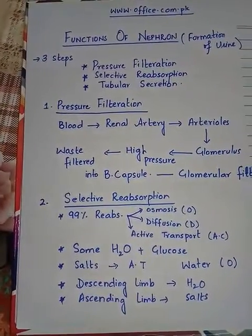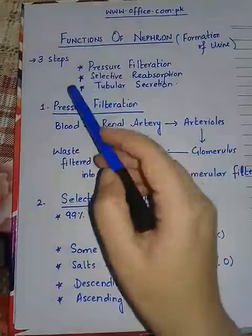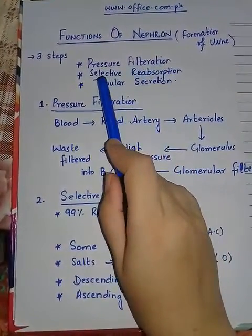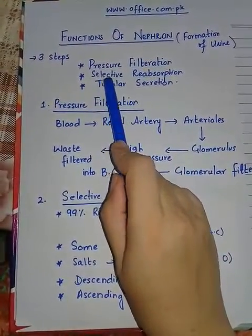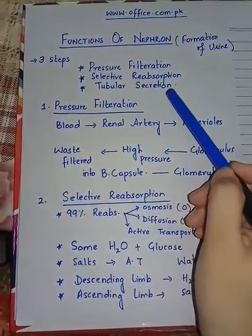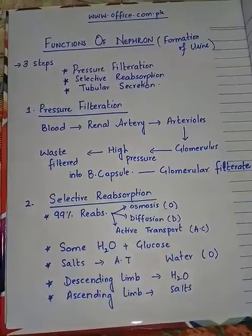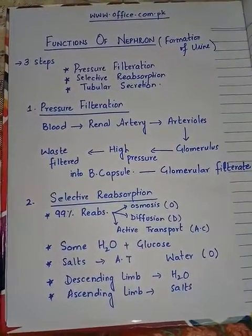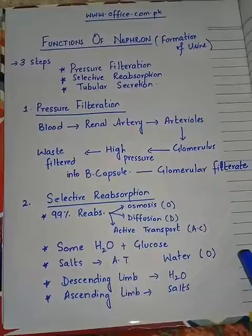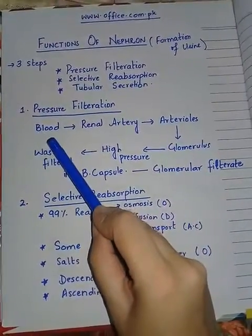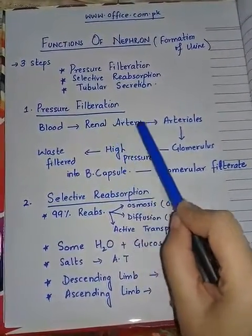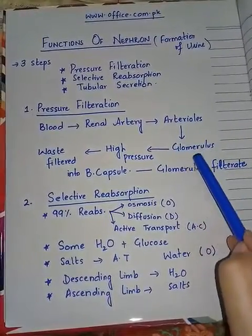Urine formation is completed in three steps: number one, pressure filtration; number two, selective reabsorption; and number three, tubular secretion. First, we will discuss pressure filtration. Pressure filtration happens when the blood from the renal artery enters the glomerulus.